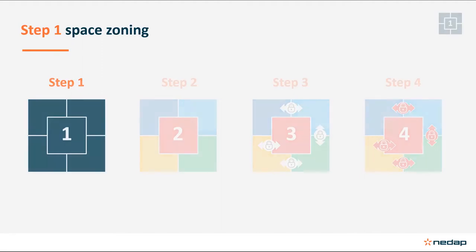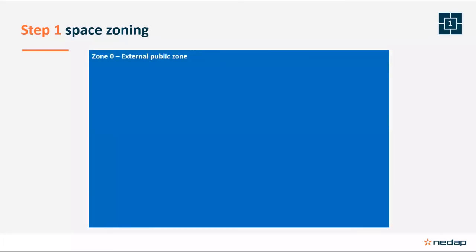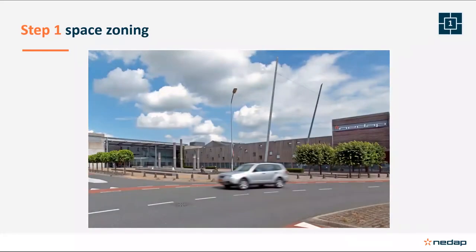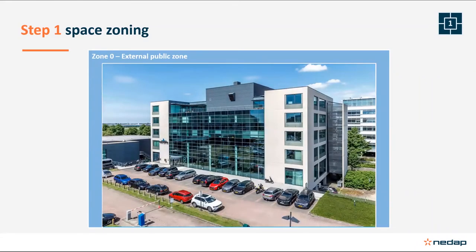Let me illustrate with an example of an office. Zone zero, or the external public zone, is a public area that is not in control of your company. Zone one is called external private space — it is in control of the company but easily accessible for the public, like a parking lot. This is what is called semi-public. Zone two is internal public space, meaning publicly accessible areas such as the reception area, so zone two is often freely accessible during working hours and is considered semi-private.